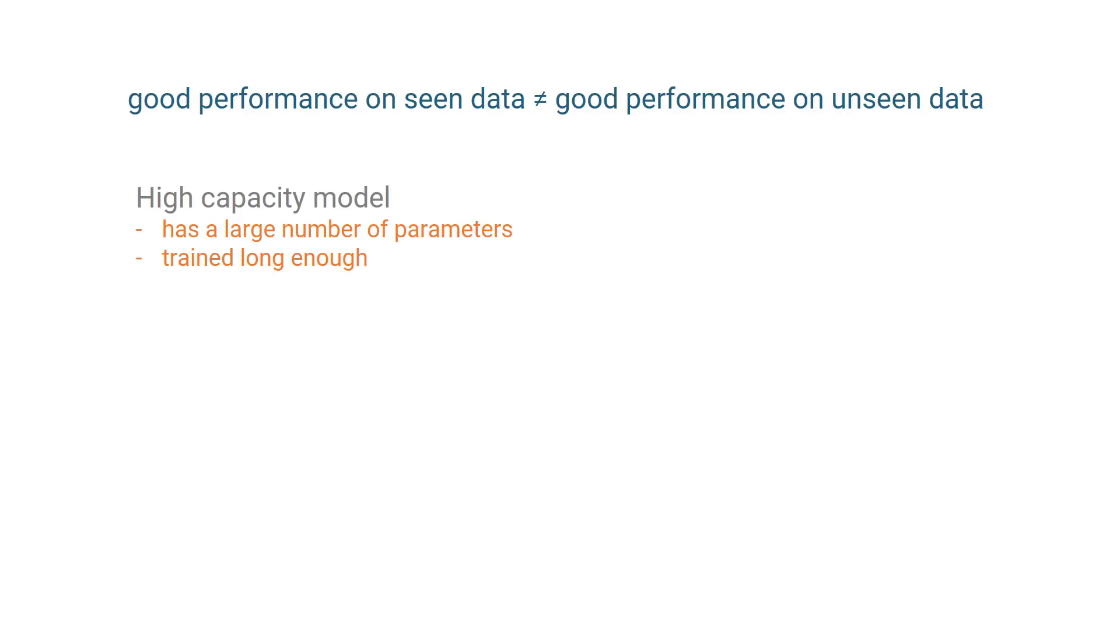If a neural network has a large capacity, in other words has a large number of trainable parameters, and is trained long enough, then it can memorize the input-output pairs in the training set.